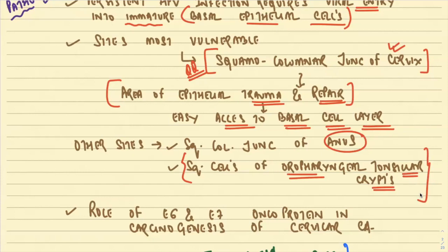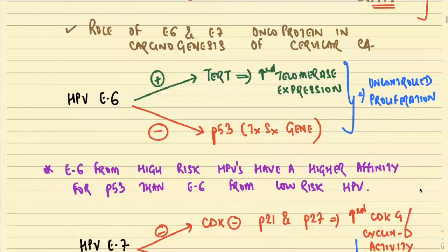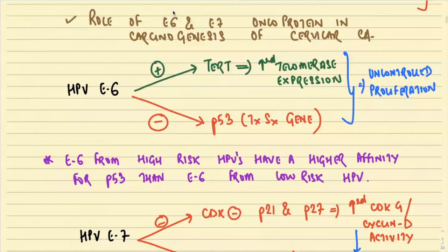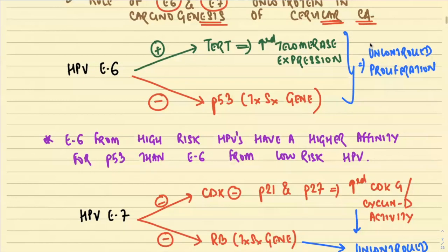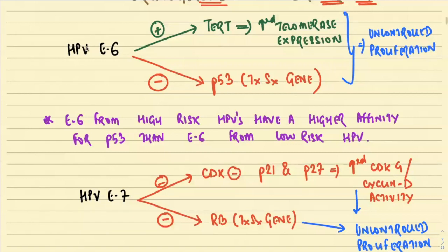Very important to the pathogenesis of HPV are two oncoproteins: E6 and E7. These play a very important role in the carcinogenesis of cervical carcinoma — a sure-shot exam question. We will first discuss the HPV E6 oncoprotein.